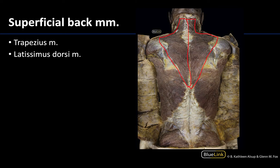It has a supposedly trapezoid shape, and that is where it gets its name. It's the more superior one, which will help to differentiate it from the also large but more inferior latissimus dorsi, which I am outlining here.